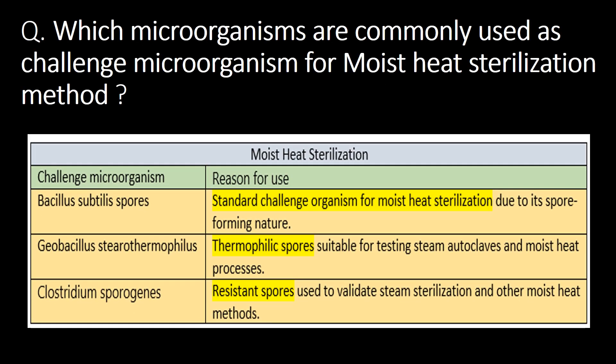Which microorganisms are commonly used as challenge microorganisms for moist heat sterilization? Moist heat sterilization is used in autoclaves or high-pressure steam sterilizers. This method is commonly used for closed chamber sterilization, such as manufacturing tanks and lyophilizer chambers. Refer to the table below for challenge microorganisms and the reason for their use.